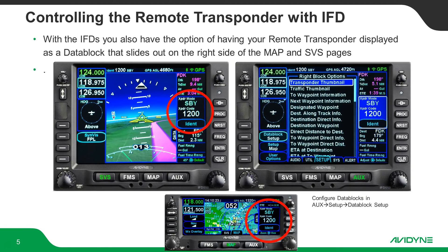You also have the little data blocks that slide out on the right side of the screen. You can add the transponder data block anywhere in your list of data blocks there, so you can keep it up all the time as well. From the AUX page setup tab, go to data block setup, move the cursor over to one of the data blocks on the right side, and then select transponder thumbnail.